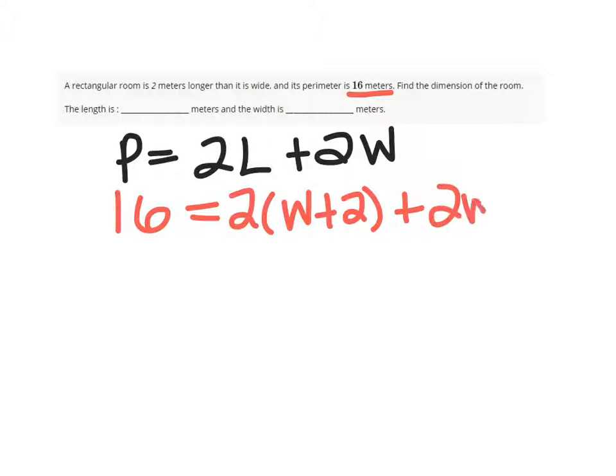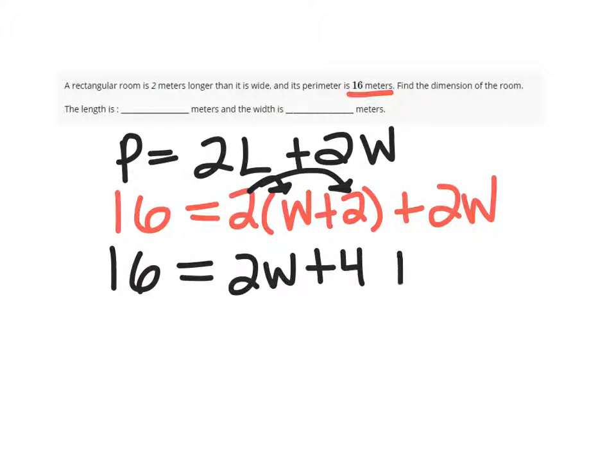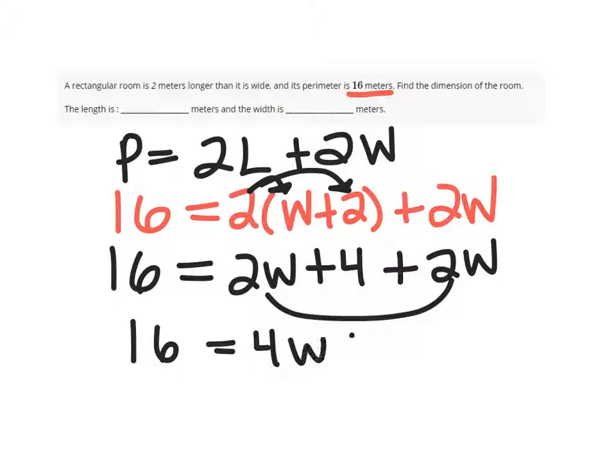And this gives us our equation. So we just solve it with the usual solving equation techniques. Distribute. We get 2W plus 4 plus the 2W. Combine like terms, so we have 16 equals 4W plus 4.